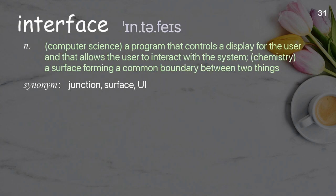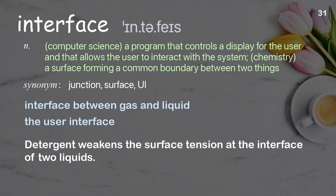Interface. Computer science: a program that controls a display for the user and that allows the user to interact with the system. Chemistry: a surface forming a common boundary between two things. Examples: interface between gas and liquid, the user interface. Detergent weakens the surface tension at the interface of two liquids.